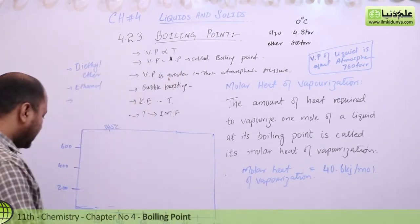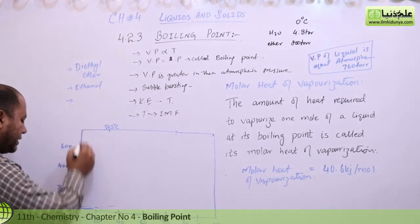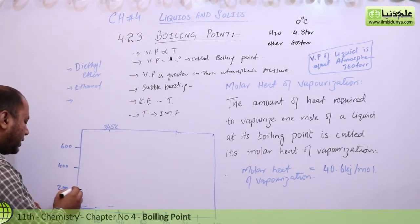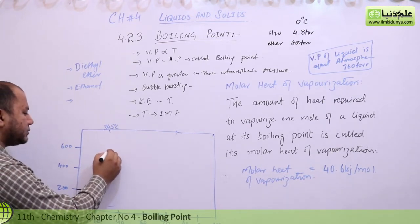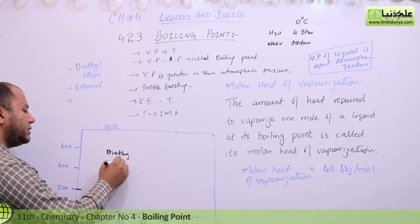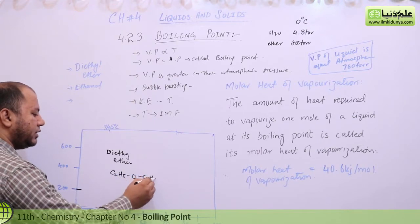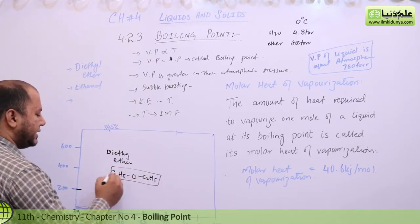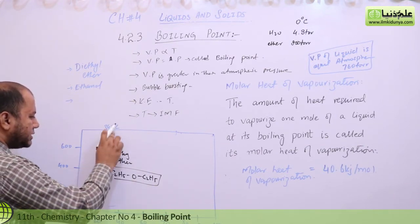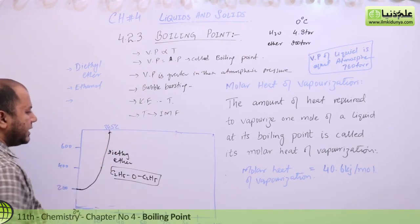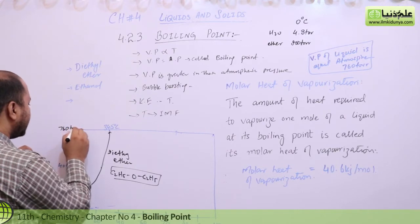This graph shown here you should know: at 0 degrees, let's say diethyl ether, C2H5-O-C2H5, that is diethyl ether. At 0 degrees it has 280 mm pressure, and the curve students moves toward 34.5 degrees, and this is the boiling range. This pressure is 760 torr pressure.